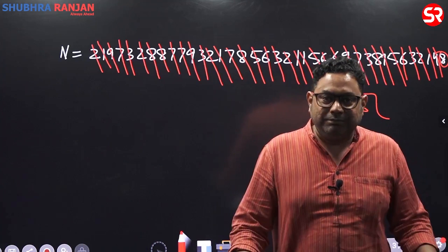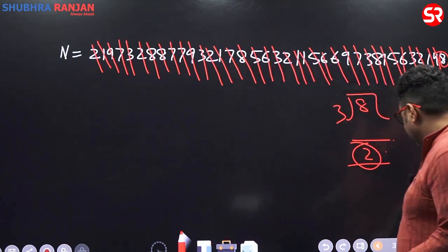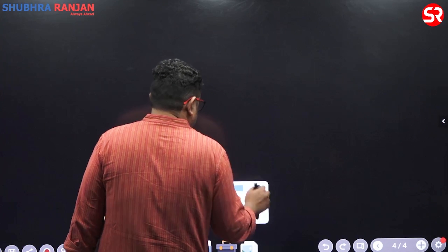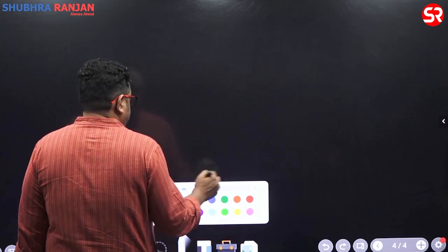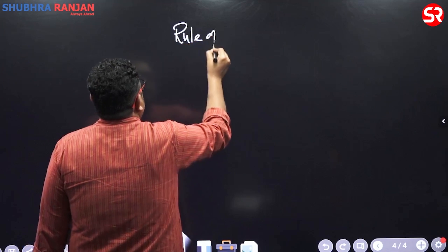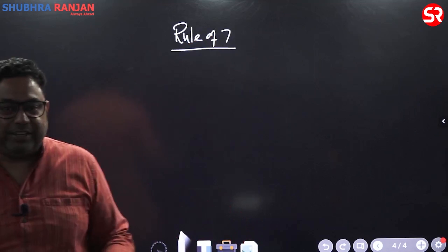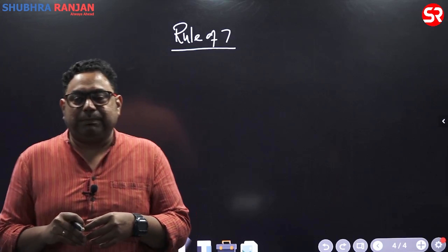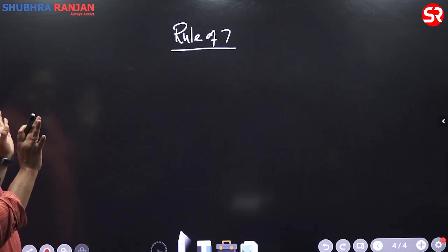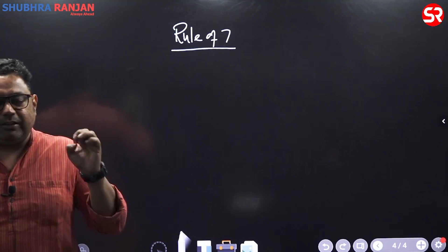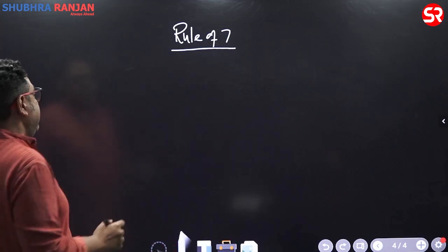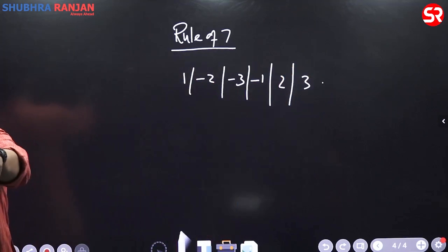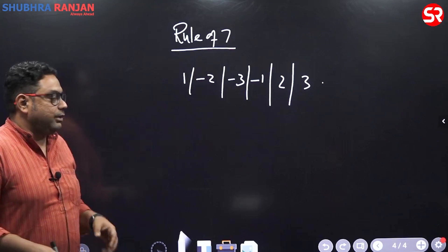A lot of teachers say there is no divisibility rule for 7, which I think is wrong. Rule of 7: remember the series 1, −2, −3, −1, 2, 3. Just put it in your mind. You write these values below the digits of the number from left to right, multiply each digit by its corresponding series value, and add all the products.